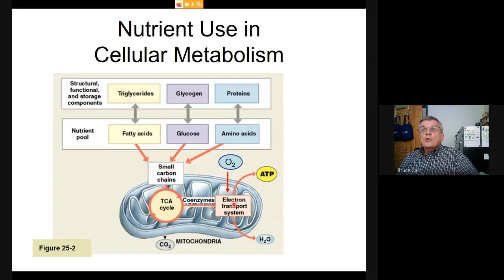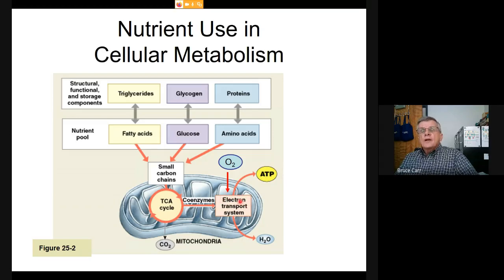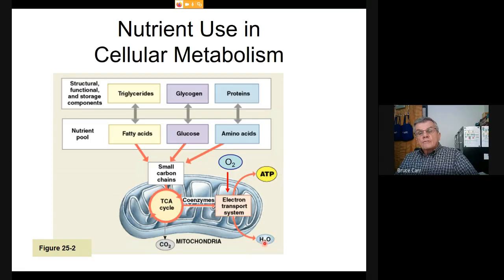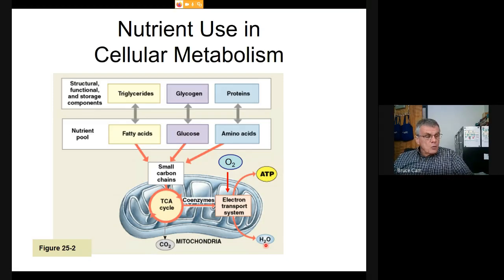On some of those energy-release steps, that energy is coupled with electron pumps and movement within the mitochondria, allowing us to make ATP. In general it steps down like a stairway. At the bottom step, oxygen takes those electrons and hydrogen ions from the matrix and makes water—metabolic water. This is not water we drink; it's a product of this process, contributing about 300 mL per day to our water balance.